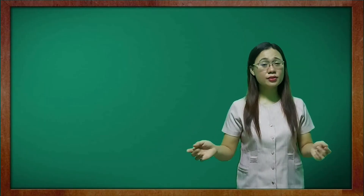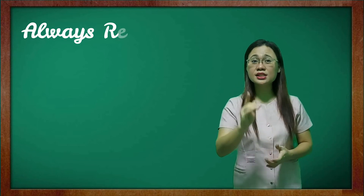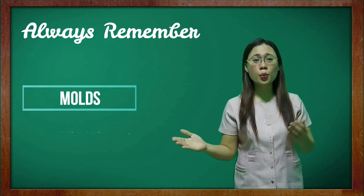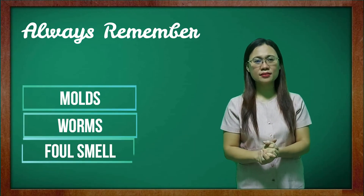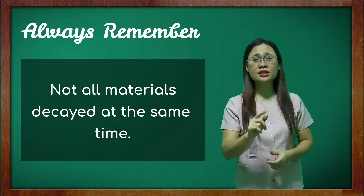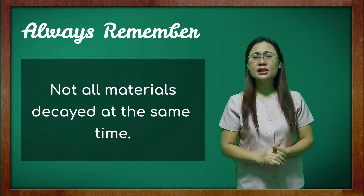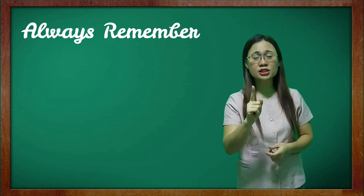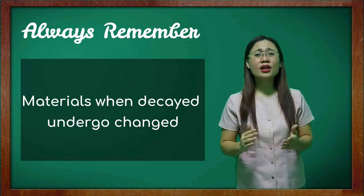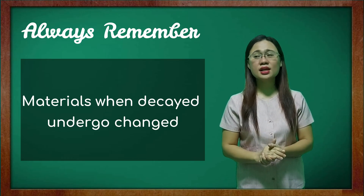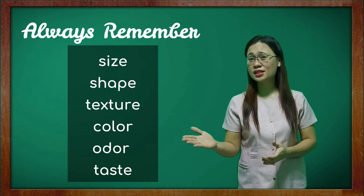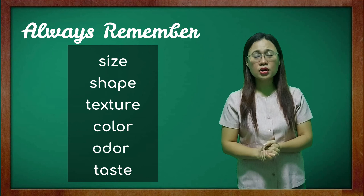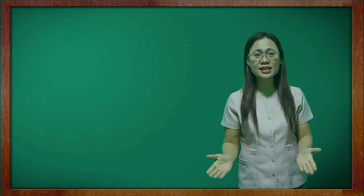Remember, a material is decaying when it has molds, worms, and foul smell. Not all materials decay at the same time — some take millions of years. Materials when decayed undergo change: some change in size, shape, texture, color, odor, and taste.